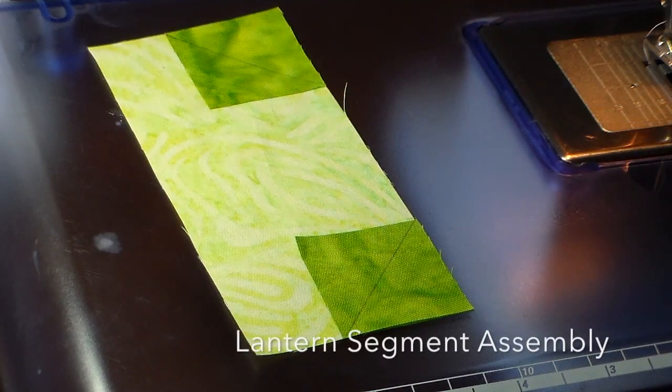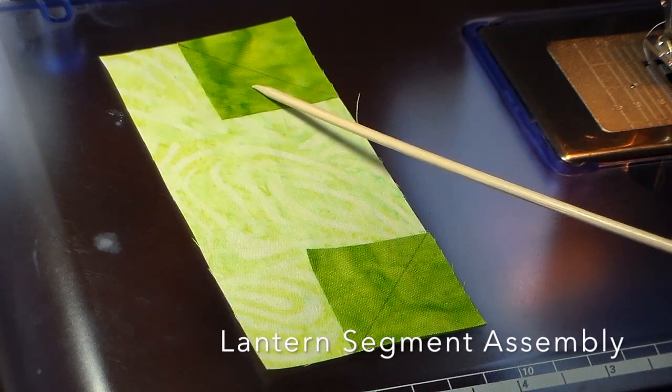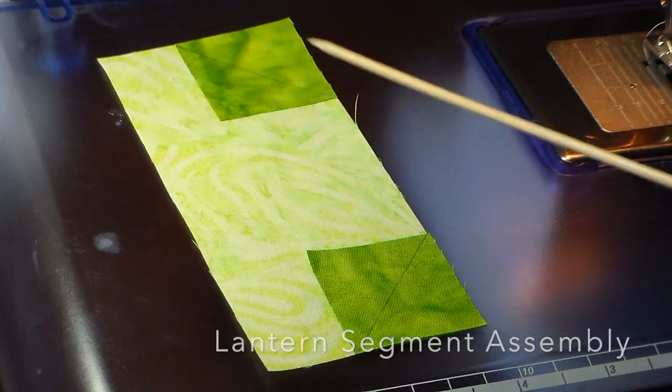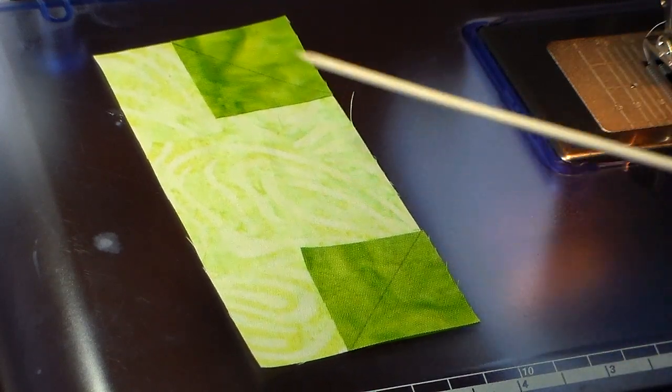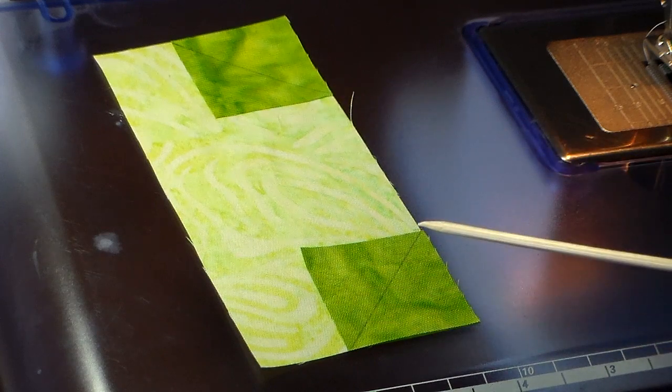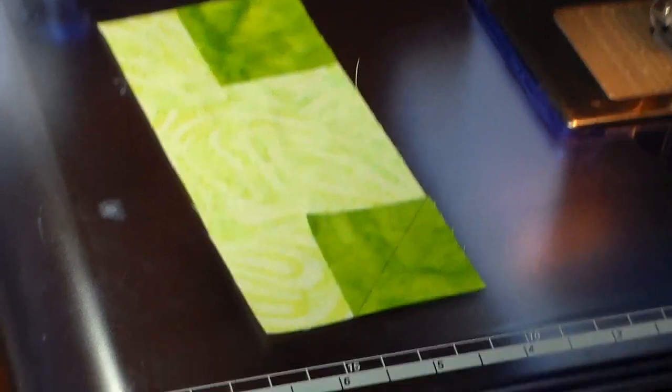Beginning the lantern portion. This is the light green and this is the next color green. I've placed two of the one and a half inch squares on the edges and drawn the diagonal lines. I'm going to do two at a time and then I'll do this corner and sew them.